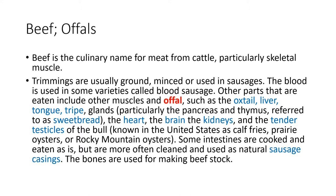So we talked about the skeletal muscles. Apart from skeletal muscle, what about the rest of it? The remains are ground or minced and used in sausage. The blood is sometimes used in what's called blood sausage. Other parts are called offals — these are edible internal organs, typically of beef.